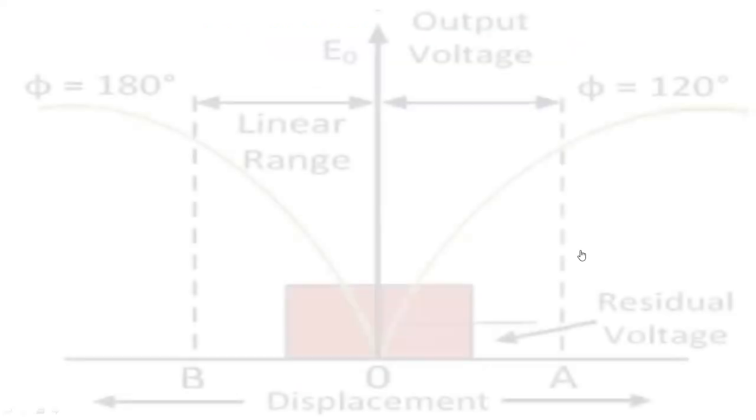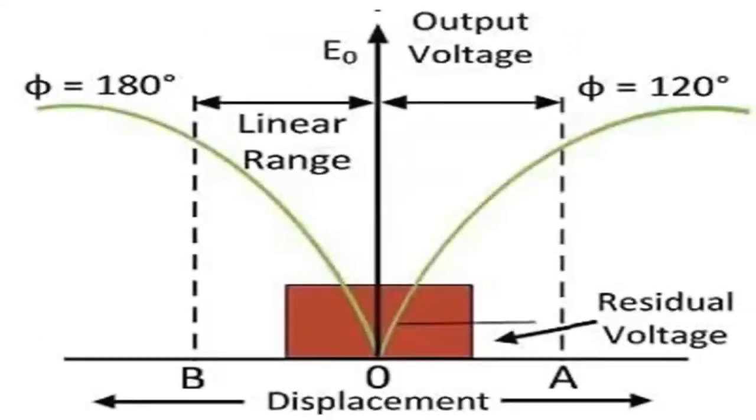The direction of the movement of an object can be identified with the help of a differential output voltage of LVDT. If the output voltage E0 is positive, this means the object is moving towards the left from the null position. Similarly, if the output voltage E0 is negative, this means that the object is moving towards the right of the null position. The amount or magnitude of displacement is proportional to the differential output of LVDT. The more the output voltage, the more will be the displacement of the object.